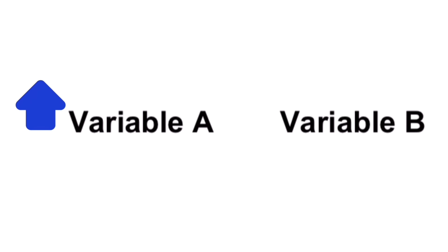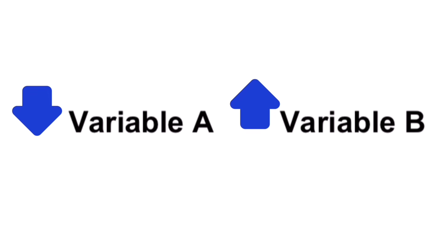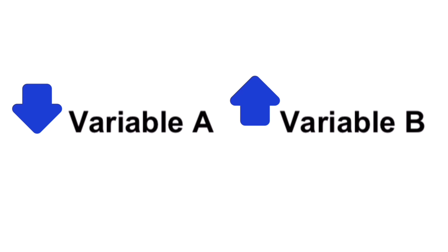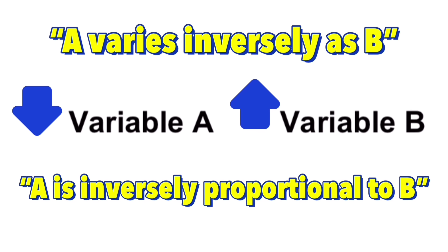So what is inverse variation? To better understand this type of variation, let's look at variable A and variable B. For inverse variation, if variable A increases, variable B will decrease. Notice the direction of the arrow — one goes up while the other goes down. On the other hand, if variable A decreases, then variable B will increase. The direction of the arrows goes in opposite directions, and that is what we mean by inverse variation. So whenever two variables are inversely proportional to each other, we say that A varies inversely as B, or A is inversely proportional to B.